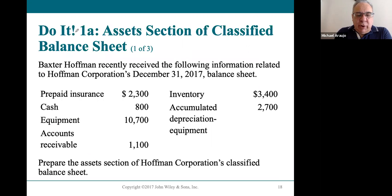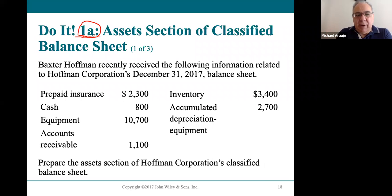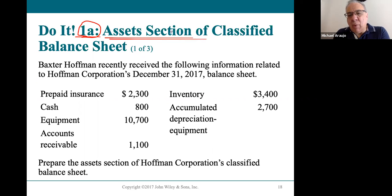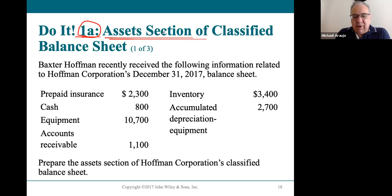Your book's learning objective one is broken into parts A and B. The asset section has four different classifications, and they want you to practice that because it's the most difficult part. Liabilities are pretty easy — there are only two classifications, current and long-term. Assets are just more complicated.